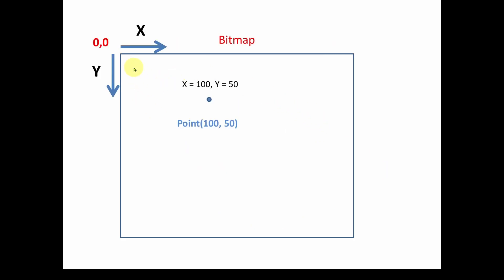It's important that we understand the basic layout of a bitmap. Bitmaps start from the upper-left corner, which is at location (0, 0). The x values increase going right, and y values increase going down. So a point might be 100 pixels over and 50 pixels down, giving coordinates of (100, 50). In Windows Forms, you can generate what's called a Point object — a nice easy way to define the location of a point in your graphic. In this case, we would have a Point with (100, 50).